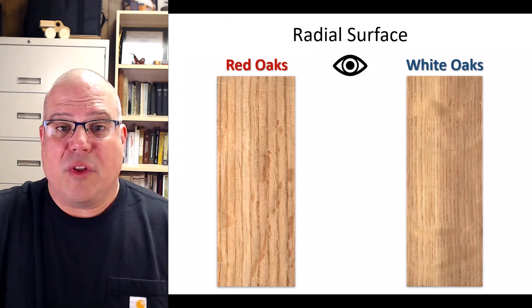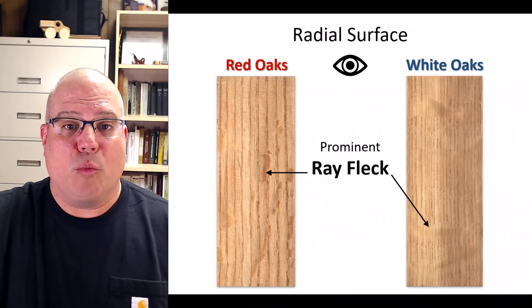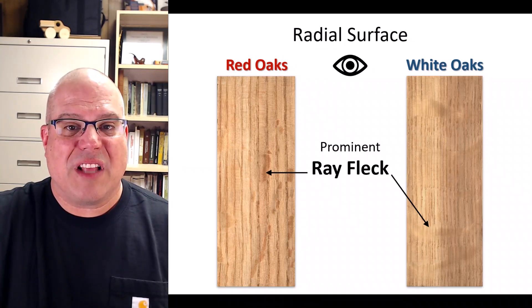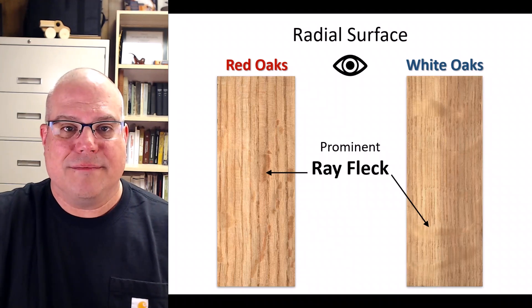Now let's move to the radial face. Both oaks show prominent ray fleck on the radial surface, which looks like smudges here and there in the grain.